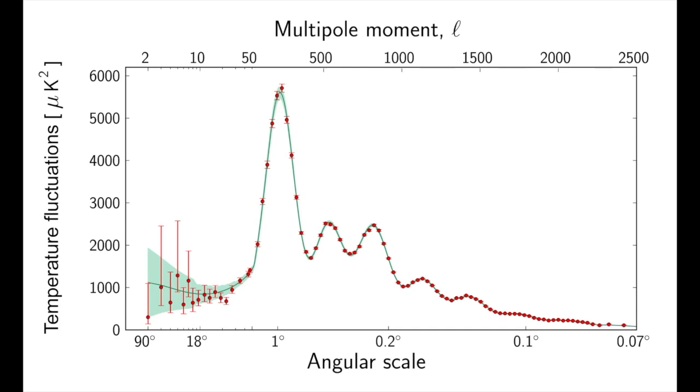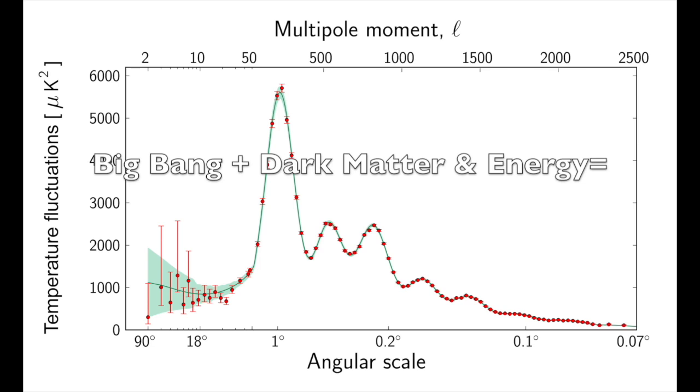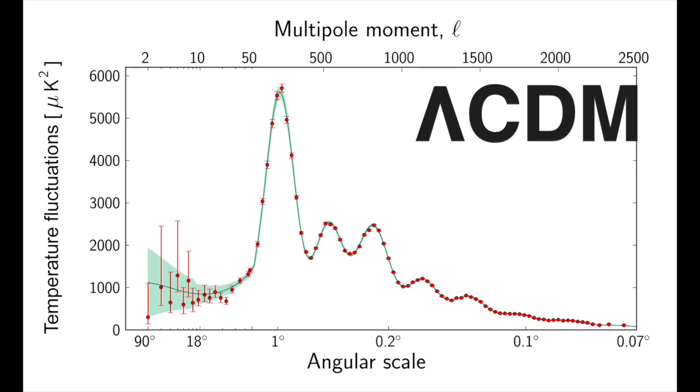This is the CMB power spectrum. The green part of this graph is the theoretical prediction calculated using the Big Bang model of cosmology together with dark matter and dark energy, otherwise known as the Lambda CDM model, the current consensus model in cosmology.